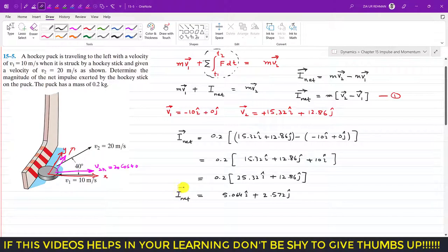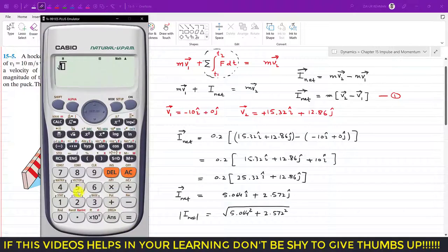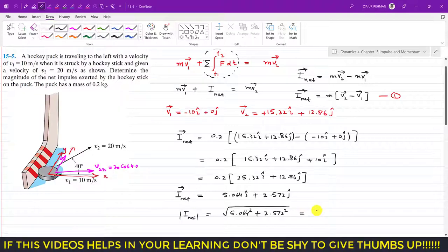If you want to find its magnitude, we can find its magnitude. I_net magnitude is the square root of 5.064 squared plus 2.572 squared. So 5.064 squared plus 2.572 squared, and this gives us 5.68, so 5.68 newton-seconds.